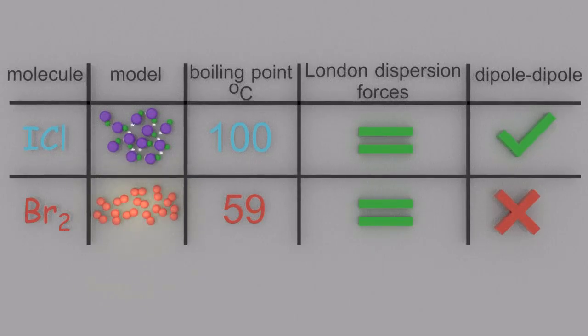The classic question is comparing iodine monochloride with bromine. They both have the same shape and essentially the same number of electrons, so their London dispersion forces will be equal. But because iodine monochloride has a dipole and bromine doesn't, that explains the difference in their boiling points.